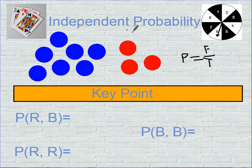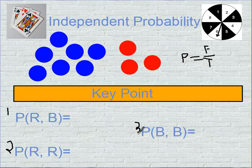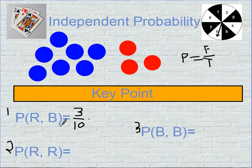In this set we have seven blue marbles and three red marbles. The probability of getting a red marble, which is our first event for this first problem, is three out of ten. We have three favorable events for the red marble and a total of ten total events that could happen.